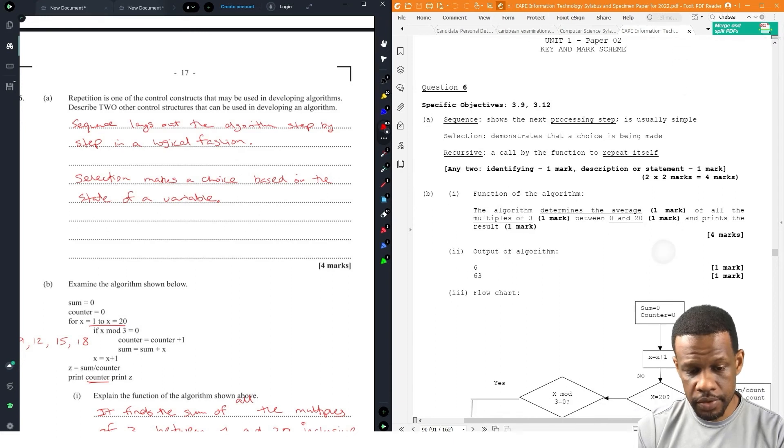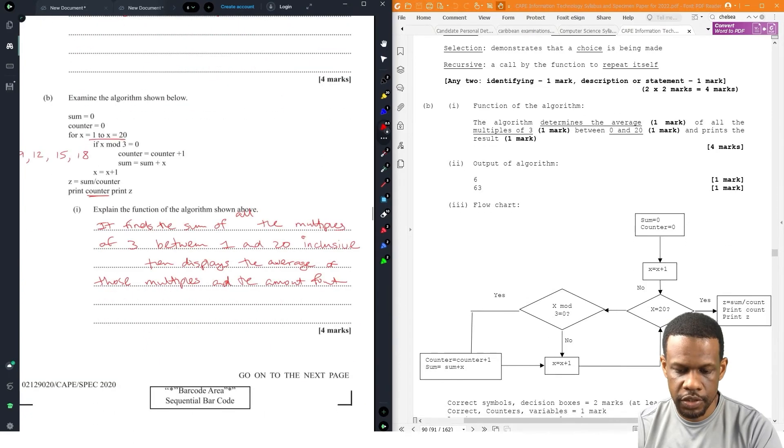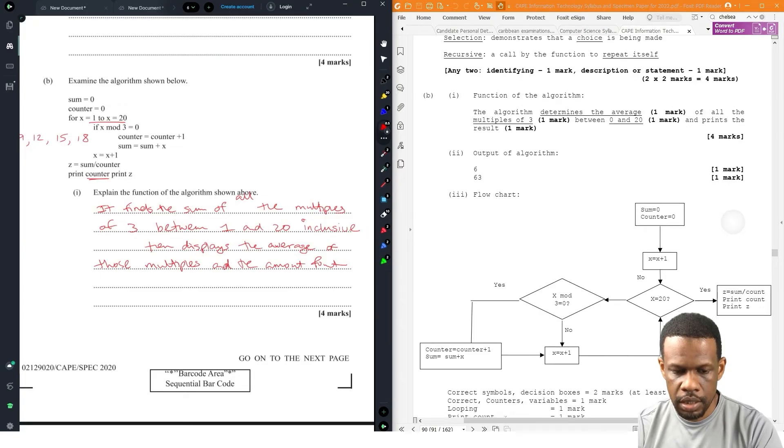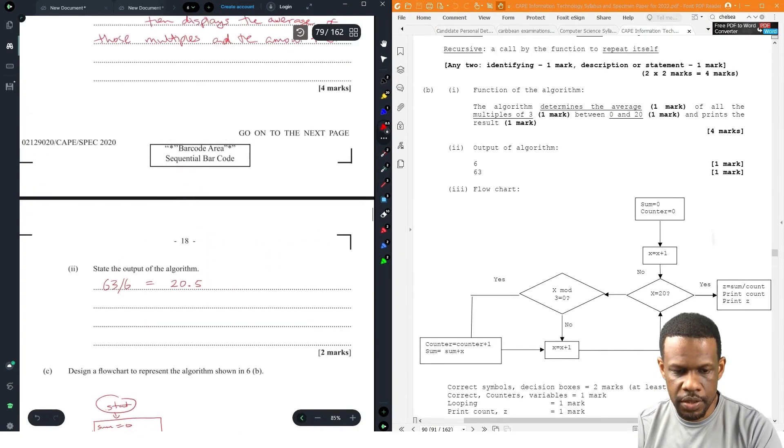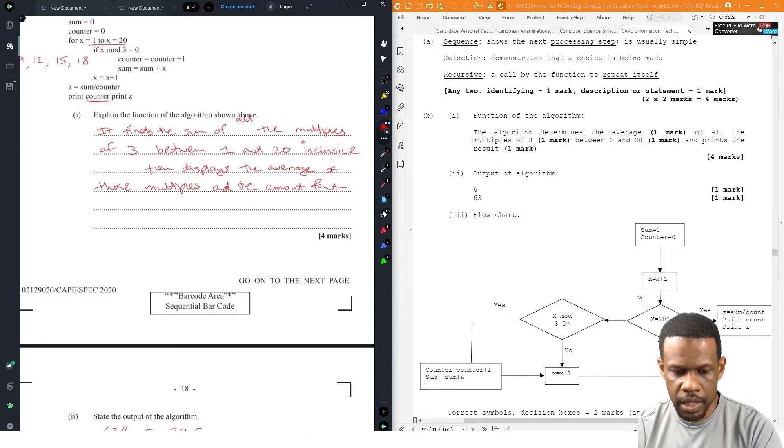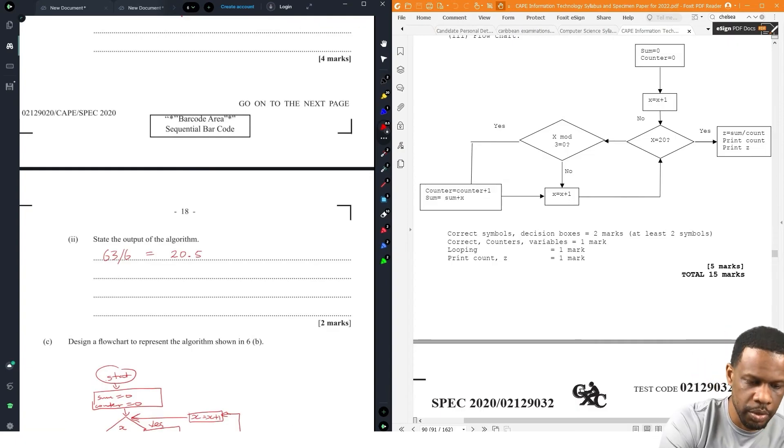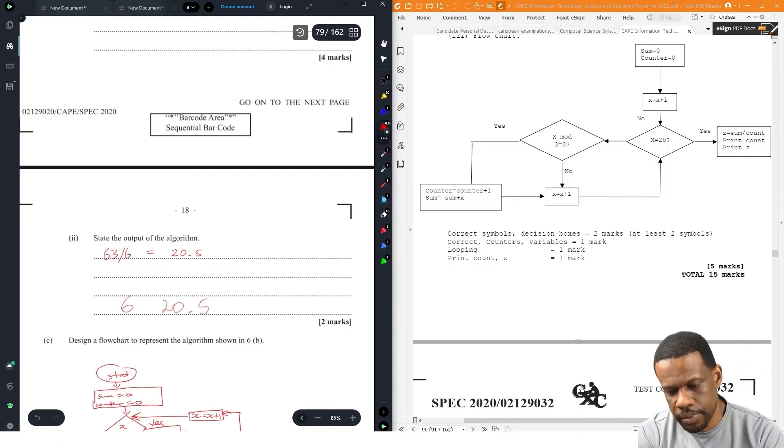From the specimen answers: sequence and selection. They have recursive too. Recursive is not on the IT syllabus, that's more computer science, but good for them. The algorithm returns the average of all the multiples of three between zero and 20 and prints the result. They didn't even mention that it prints the counter, because it is printing the counter. The output of the algorithm is 63. No, the output is not 63. Z is sum divided by counter. That's an error. The output is 63 divided by six, so it will print six and then 10.5. It wouldn't say 63. Definitely wouldn't say 63.